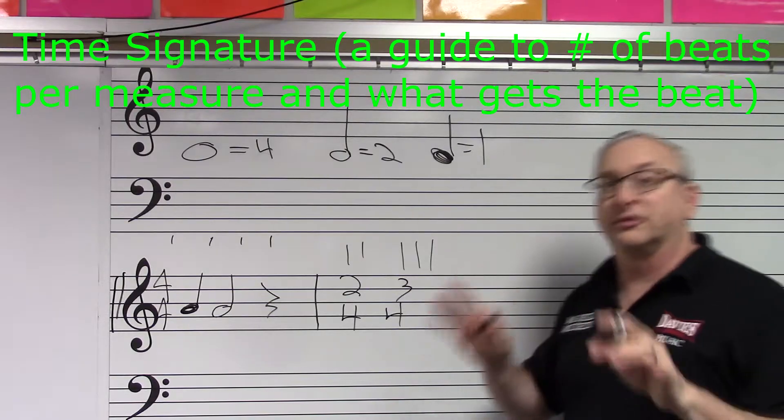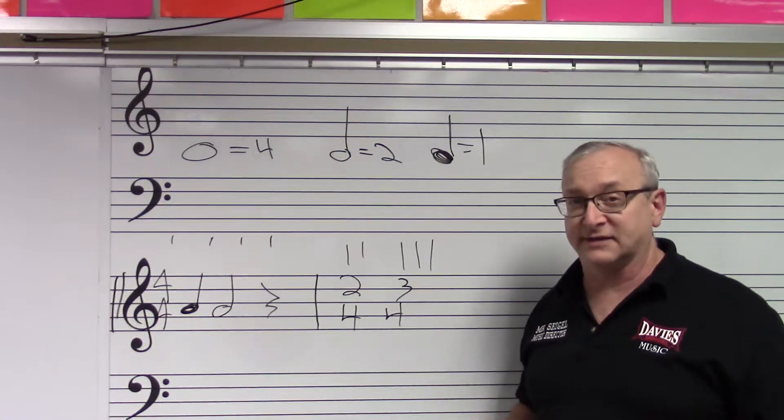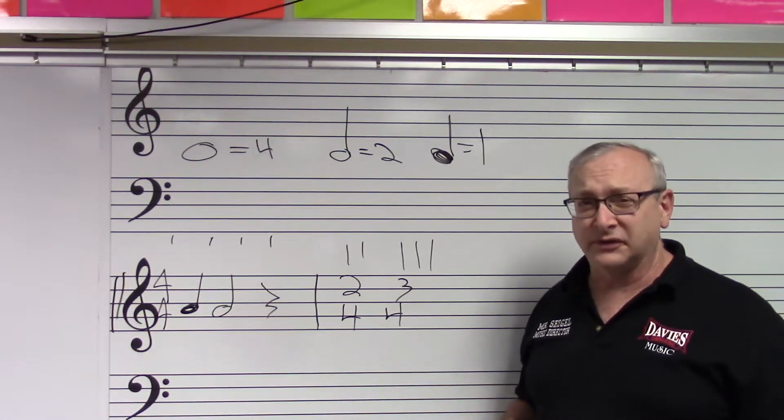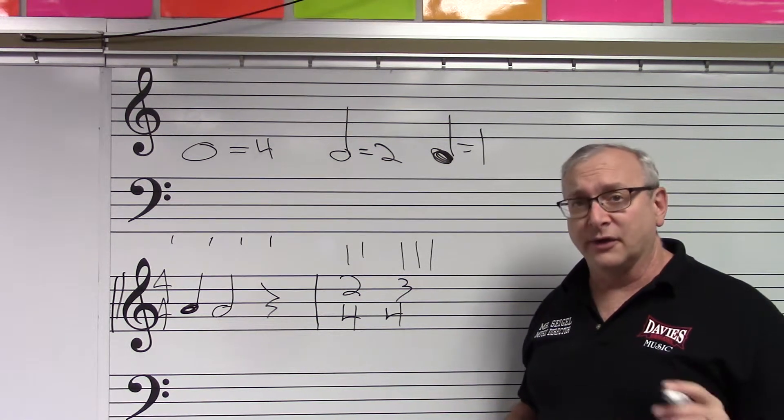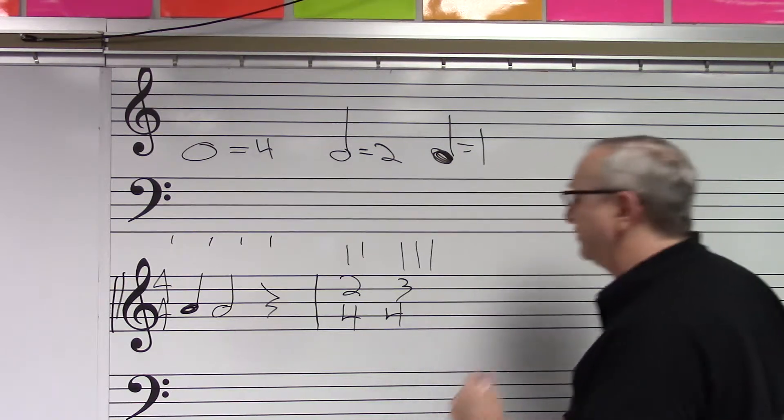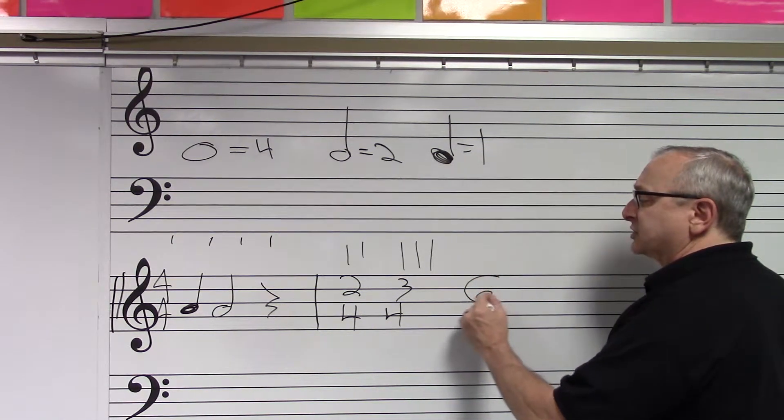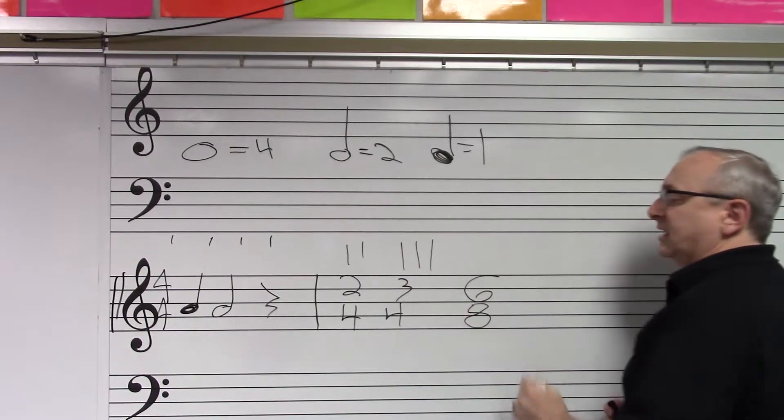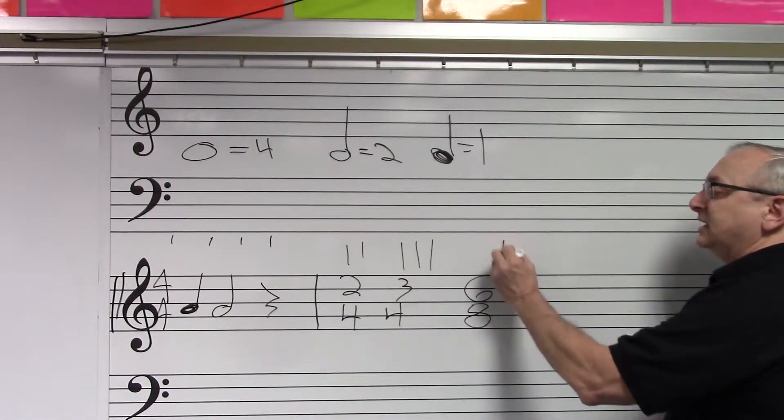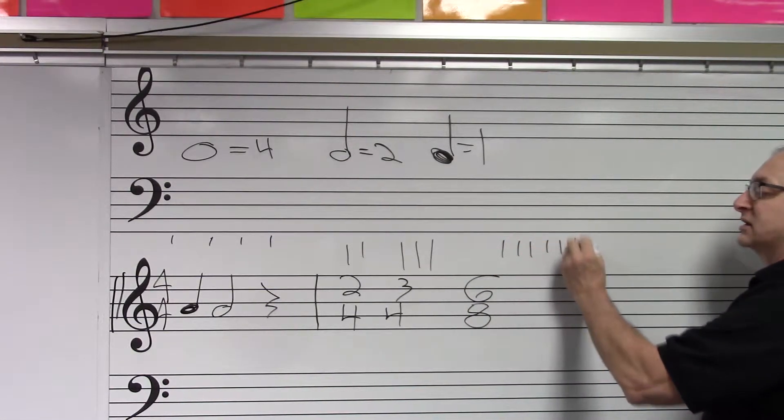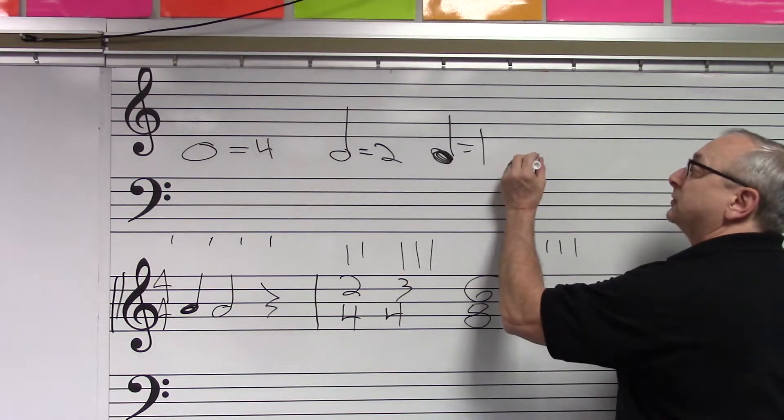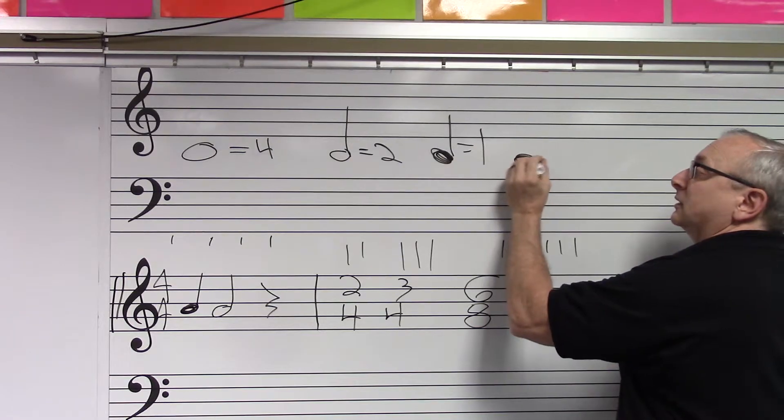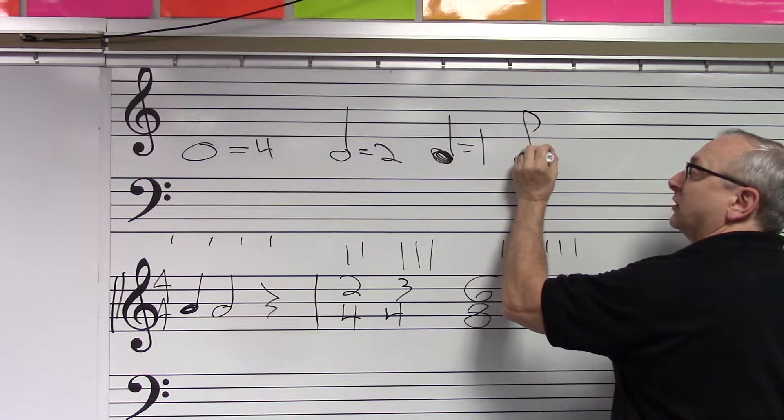There are some other wild and crazy sophisticated time signatures. We really don't sing in them very much. We don't sing in the other familiar or common time signature anymore, which is called 6/8. And 6/8 means that there are six beats per measure, but the eighth note gets the pulse.